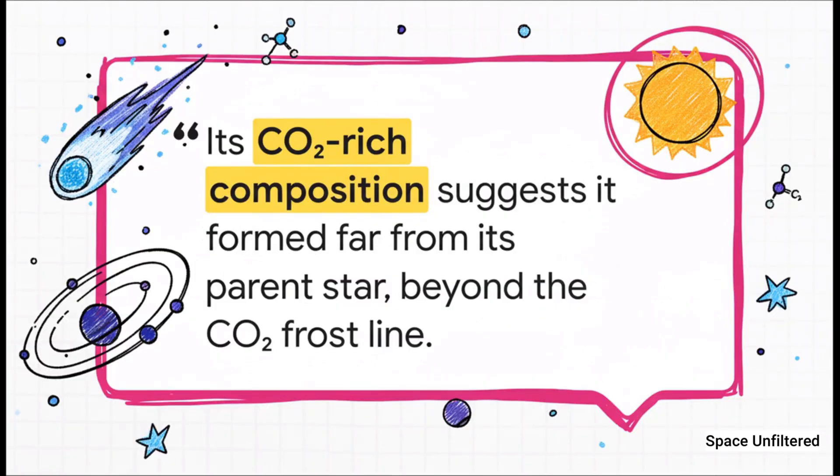Its chemical makeup reinforces this idea of a different origin. The abundance of carbon dioxide suggests it formed in an extremely cold region of its original protoplanetary disk, far from its parent star, beyond what's known as the CO2 frost line. It's a fossil, perfectly preserving the chemistry of that distant cold environment from billions of years ago.